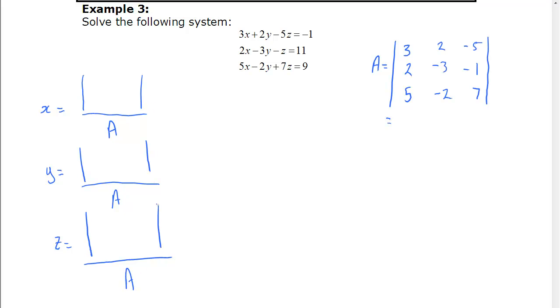So now once we find A, we can put that in each denominator, and we just simply have to find the determinants in the numerators. So for x, we're going to replace the x coefficients with the constant. So the first column becomes negative 1, 11, 9. And everything else is the same, so minus 3, minus 2, minus 5, minus 1, and 7. So we replace the first column.